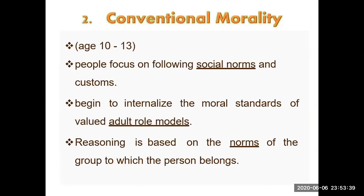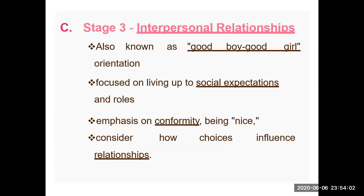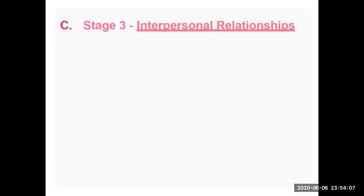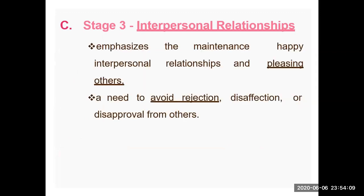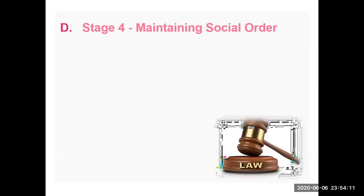Then comes the second level: conventional morality, which starts after the pre-conventional level. At this stage, people focus on different social norms and customs, and they also value adult role models by which they follow the rules. This level also has two stages: interpersonal relationship, and maintaining social order.